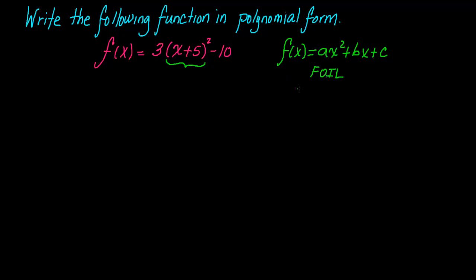When we do FOIL, what that means is we write x plus 5 squared as x plus 5 times x plus 5. And then we take the first term, that's your F in FOIL, times the first term here, and that gives you x squared.